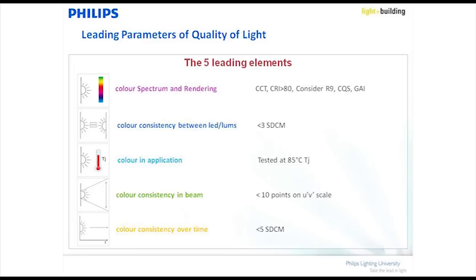The third element is color in the application, which is the junction temperature at 85 degrees. The fourth is color consistency in the beam, where we talk about delta u-prime v-prime — a technical way of showing on the CIE color chart the difference between one light source and another.